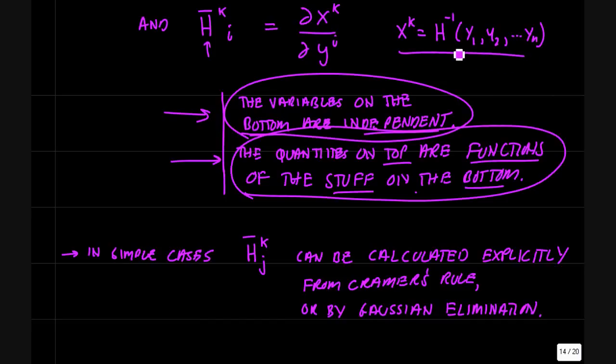So now look at this. The inverse matrix h bar - well, the inverse matrix is going to have x as the new coordinates. X's are equal to the inverse function h operating on the y's. So the Jacobian for the inverse transformation is written this way: dx^k by dy^i. And the x^k's are given by the function h inverse.